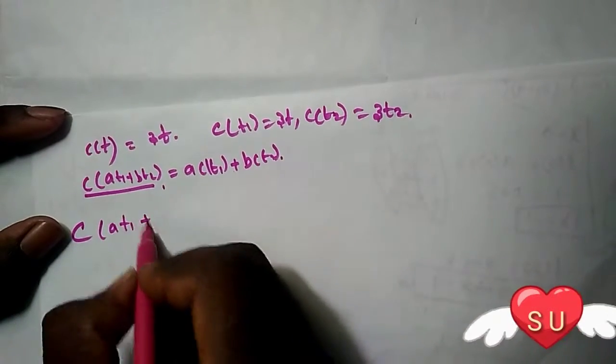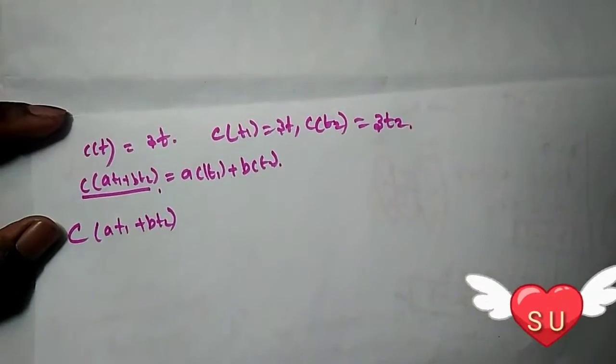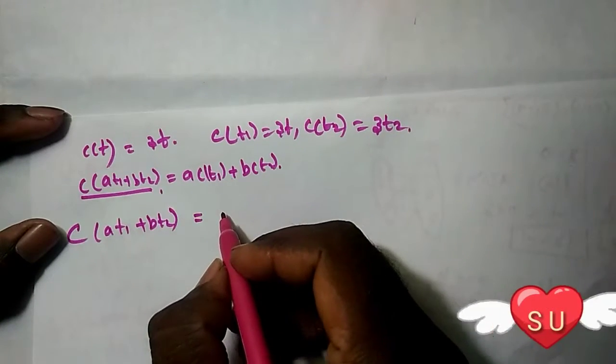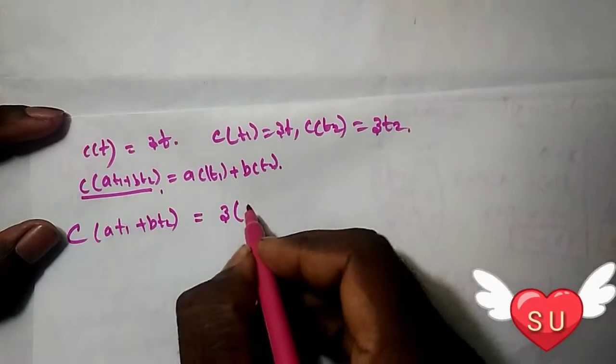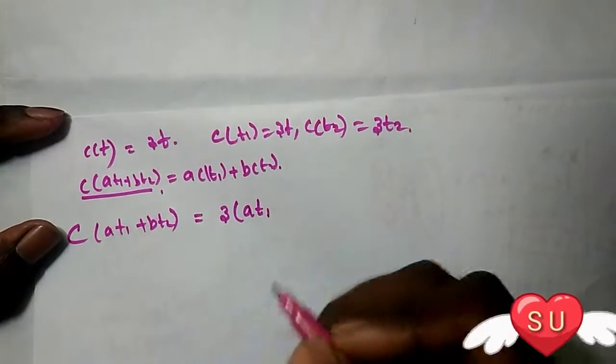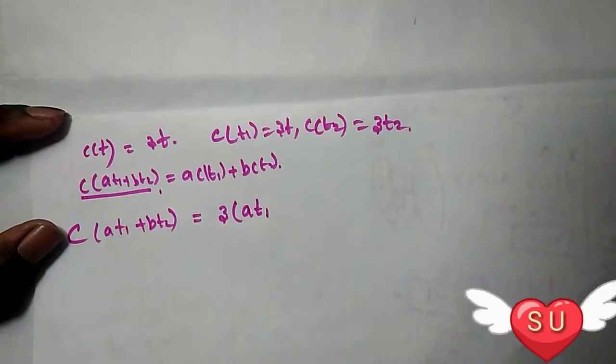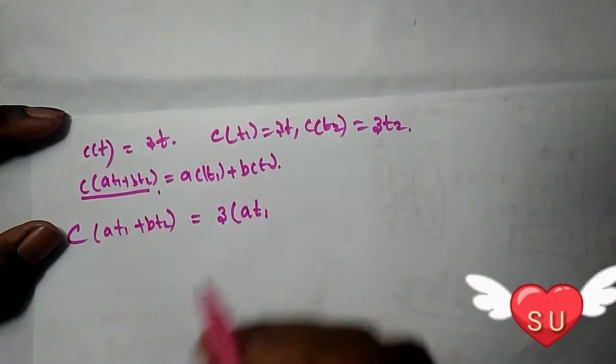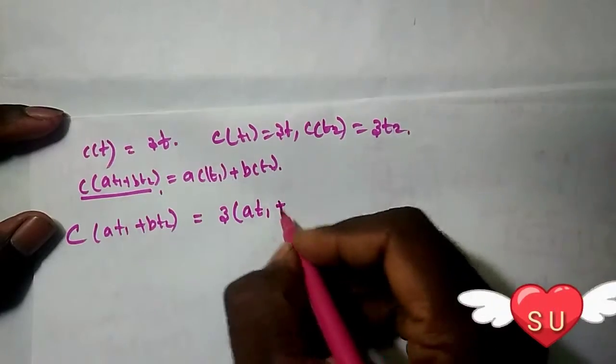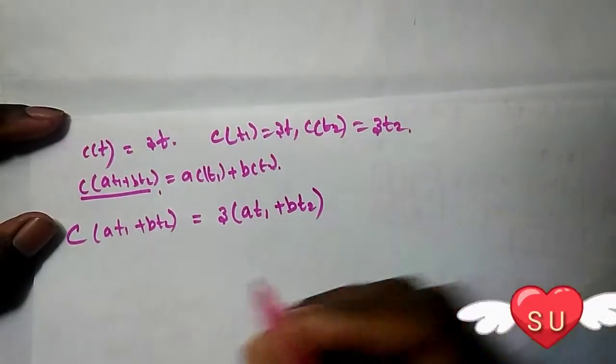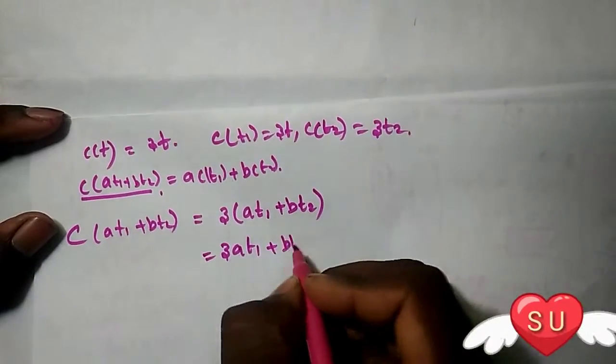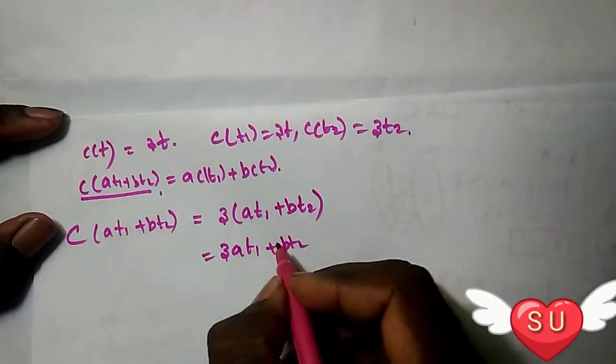Now let's compute C of A T1 plus B T2. This equals three times A T1 plus B T2.